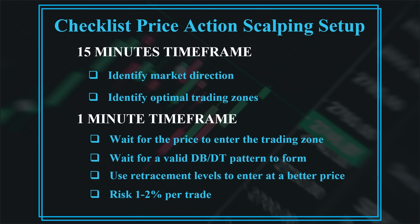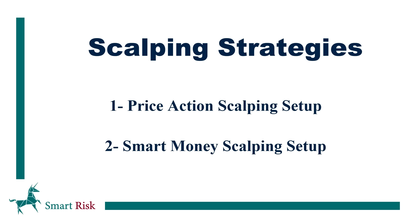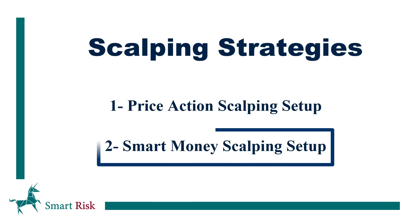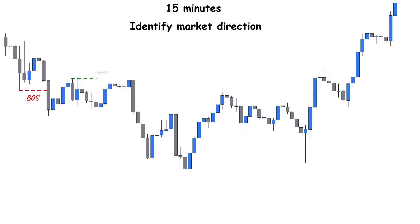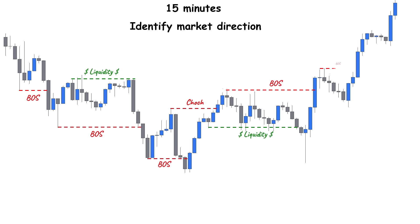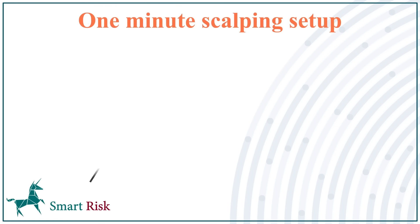In the second part of this video, let me show you a more advanced smart money scalping setup. The second trading strategy is an order block entry pattern accompanied by a liquidity sweep, which also uses two time frames. In the first step, we implement the market structure concepts of smart money to find the market direction on the 15-minute chart. Once we find the higher time frame direction we know whether we are going to buy or sell. Then we drop to the one-minute chart and search for a specific trading setup.